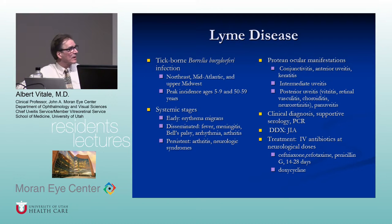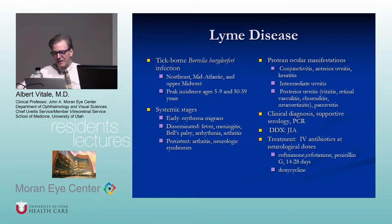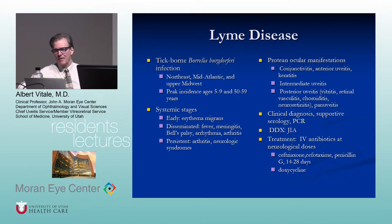Early in the disease, conjunctivitis is the most common finding, but intermediate uveitis is probably the most common overall ocular presentation. Posterior uveitis with vasculitis can occur. Clinical diagnosis is important, along with supportive serology and PCR with Western blotting. The differential in a child is JIA. Treatment is with IV antibiotics at neurological doses, just like syphilis.